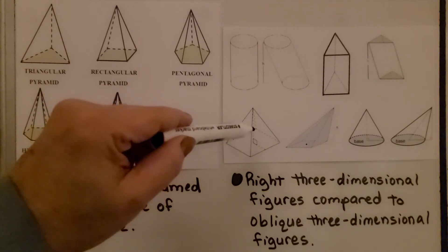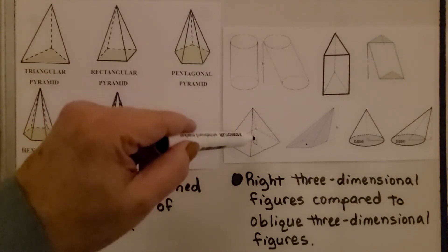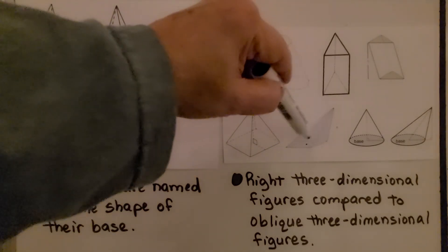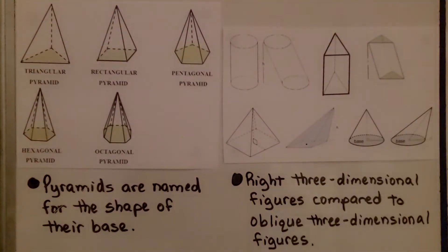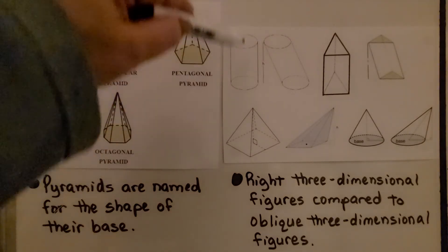Here's a right pyramid, right rectangular pyramid. Here's an oblique pyramid. Here's a right cone, here's an oblique cone. So do you see how the oblique ones are kind of leaning off to the side? And the right ones are straight up?